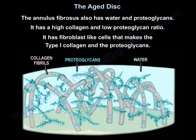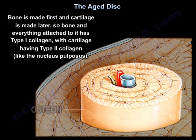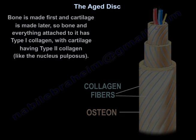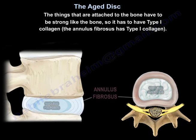The annulus fibrosus also has water and proteoglycans. It has a high collagen and low proteoglycan ratio, with fibroblast-like cells that make type 1 collagen and proteoglycans. Bone is made first, cartilage is made later. Bone and everything attached to it has type 1 collagen, and cartilage will have type 2 collagen. Since structures attached to bone must be strong, the annulus has type 1 collagen.